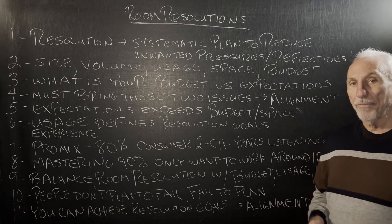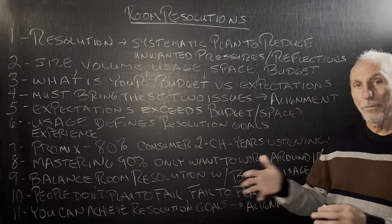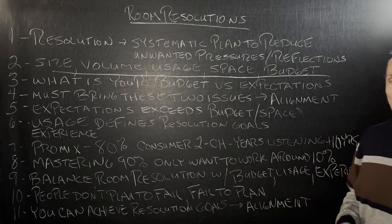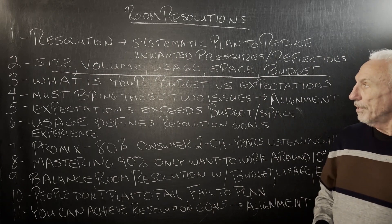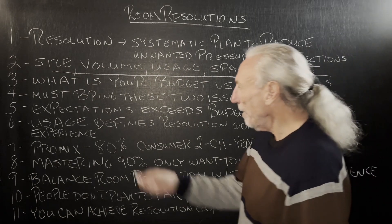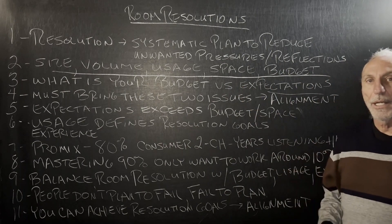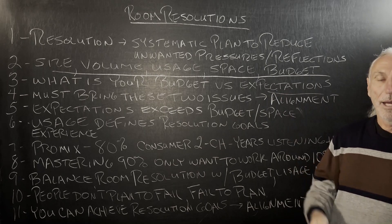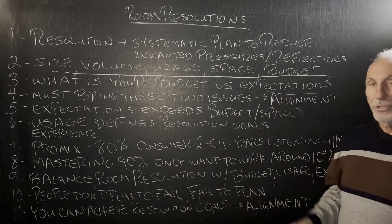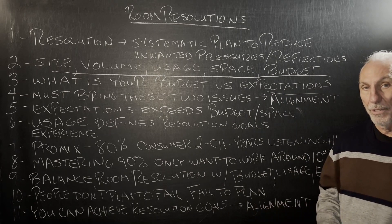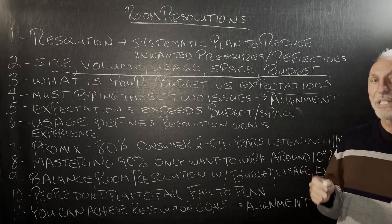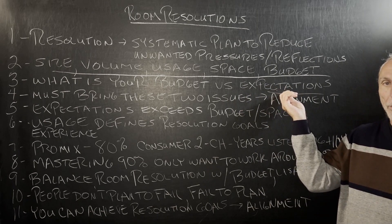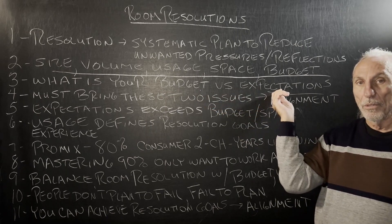We have to quantify that — it's a quality we want. Over the years we look at a lot of things: size, volume, usage, space, budget — all kinds of variables. We took all those variables and put them together. What is your budget versus your expectations? People have really high expectations based on their experience as a professional engineer, mixing, generating revenue, or just listening experience — 15, 20, 25, 40, 50 years of listening. Most of the time you've got to lower expectations because the budget isn't there to satisfy the goal.